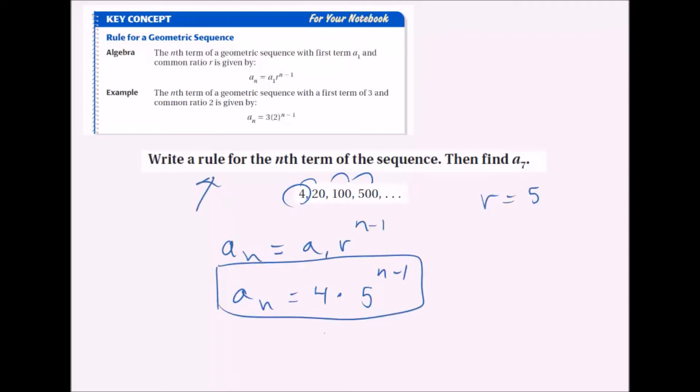Then it says find a_7. What that means is we want to know what a is equal to when n is 7. So a_7 is equal to 4 times 5 to the 7 minus 1. If it says find a_7, we're really plugging that in for n to see what a equals when n is 7. That's what a_7 means.